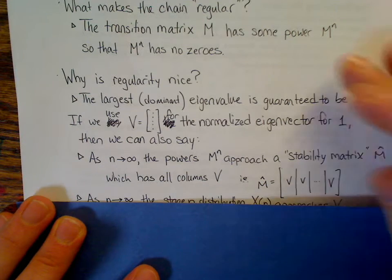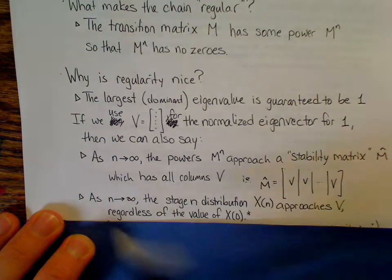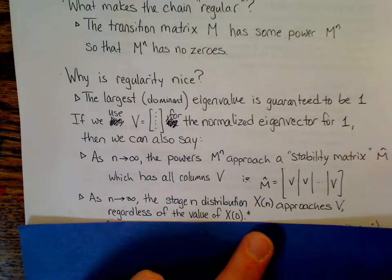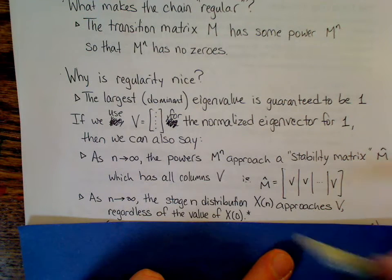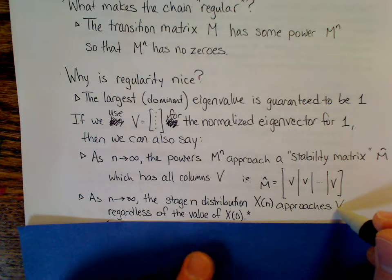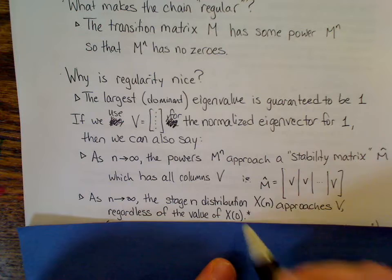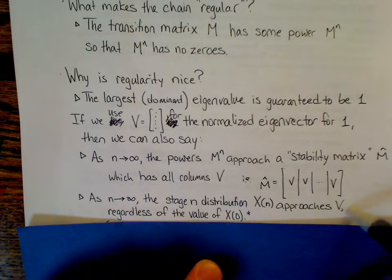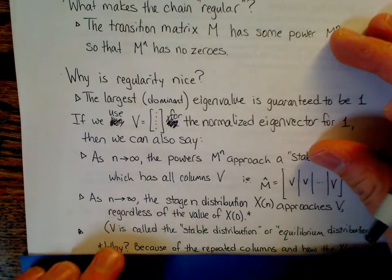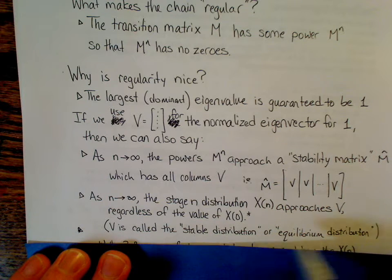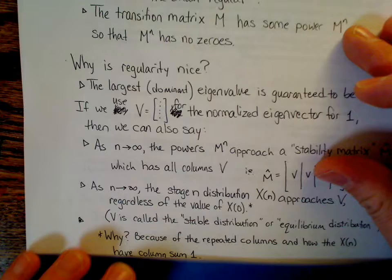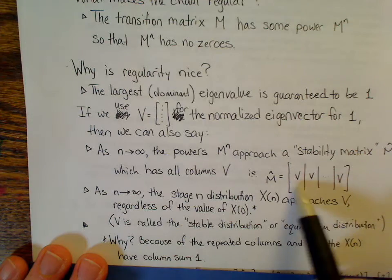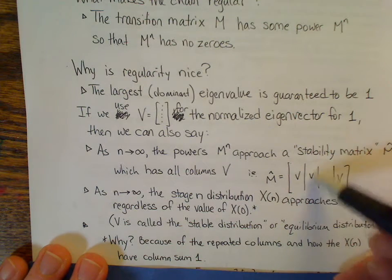For example, as n gets really large, as n goes to infinity, the M^n is going to start to look, it's going to settle down so that all the columns look the same, and what they all end up looking like is this normalized eigenvector. So these columns will all look like v. Not only that, but as n gets very large, the distributions, the X(n), the way that the items are distributed among the categories, or the way the probabilities are distributed, is also going to look like v. Regardless of what you start from, this is something that's special about regularity, that it doesn't matter what you start from, it'll always end up at this eigenvector.